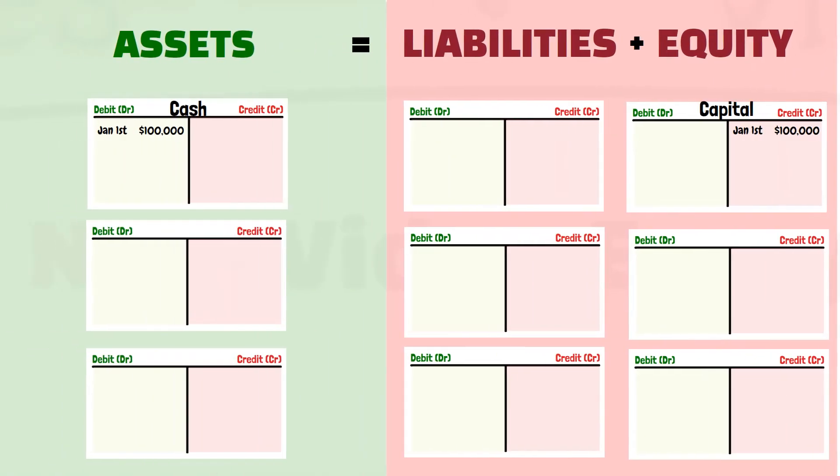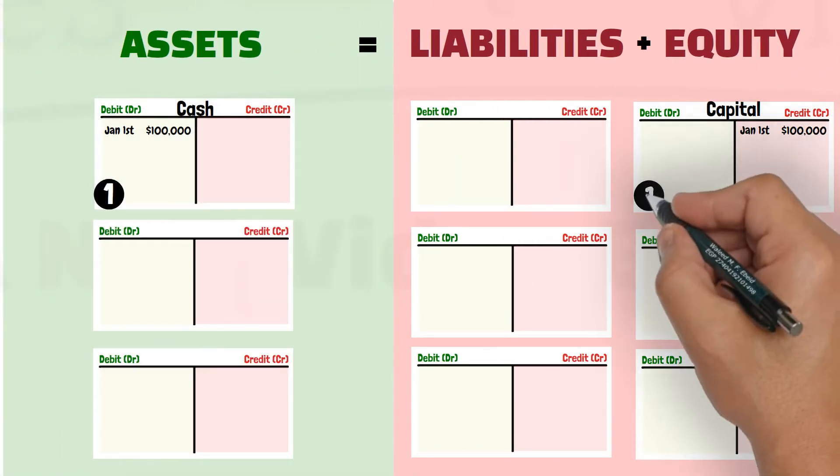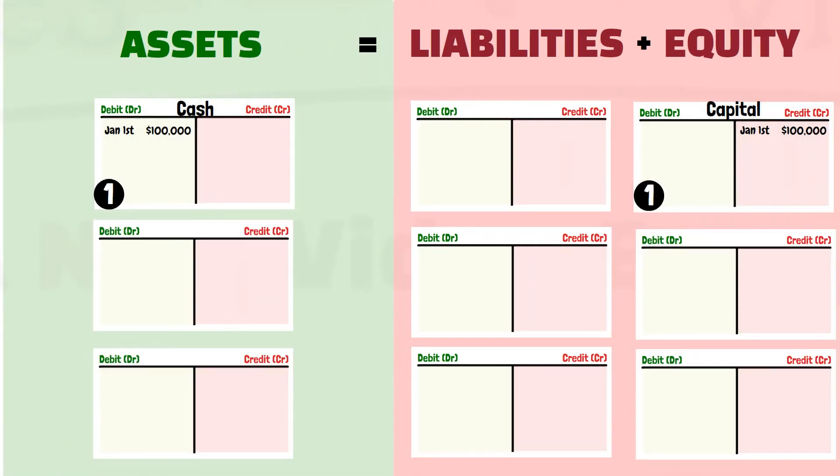So the transaction was recorded in two accounts, and this is what we call the double entry bookkeeping.